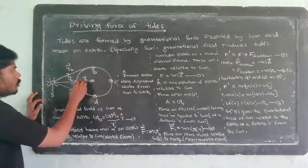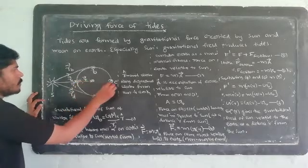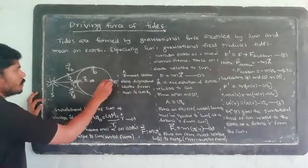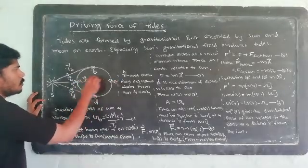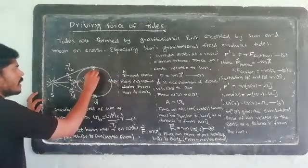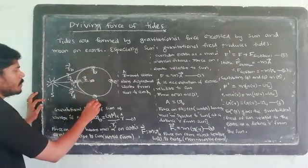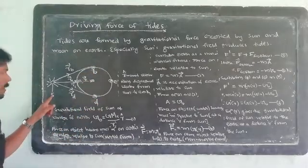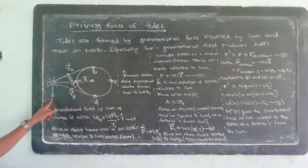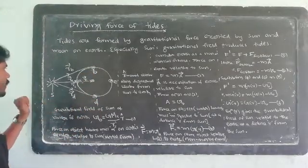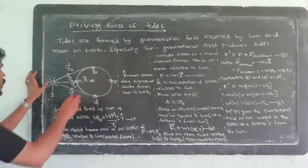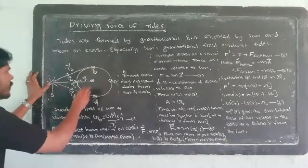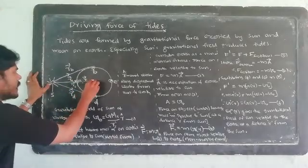On the equator, there are 2 points: A and C. At the poles, there are 2 points: B and D. We also have the sun positioned at a distance from the earth.